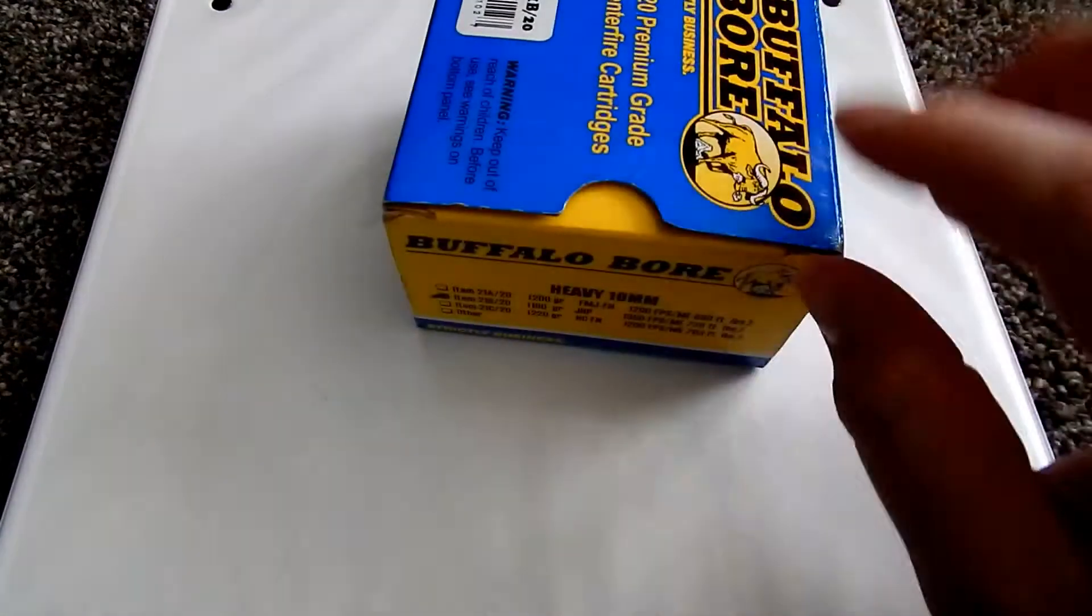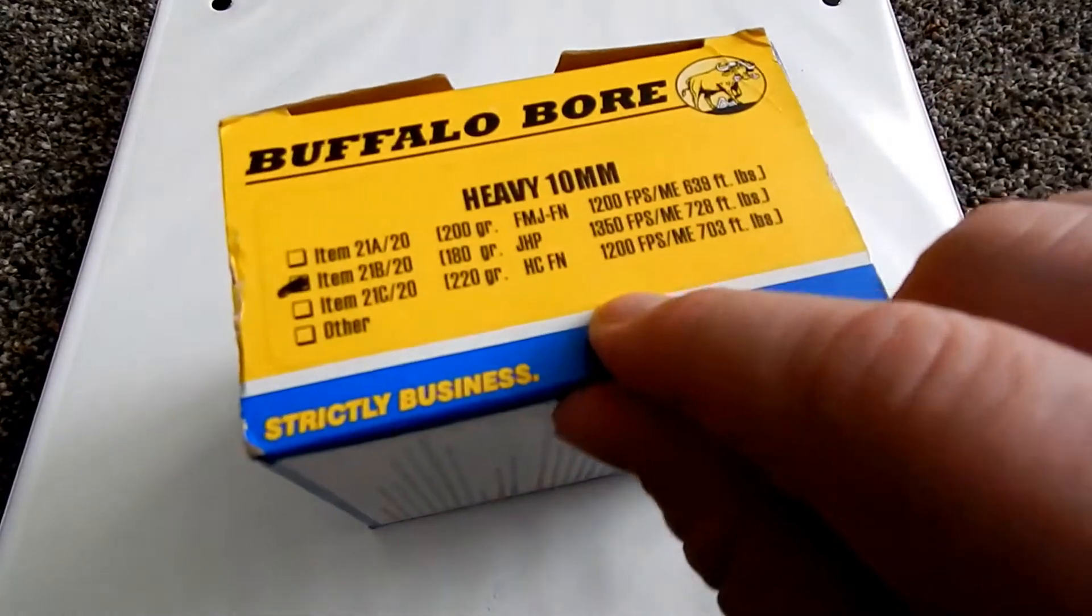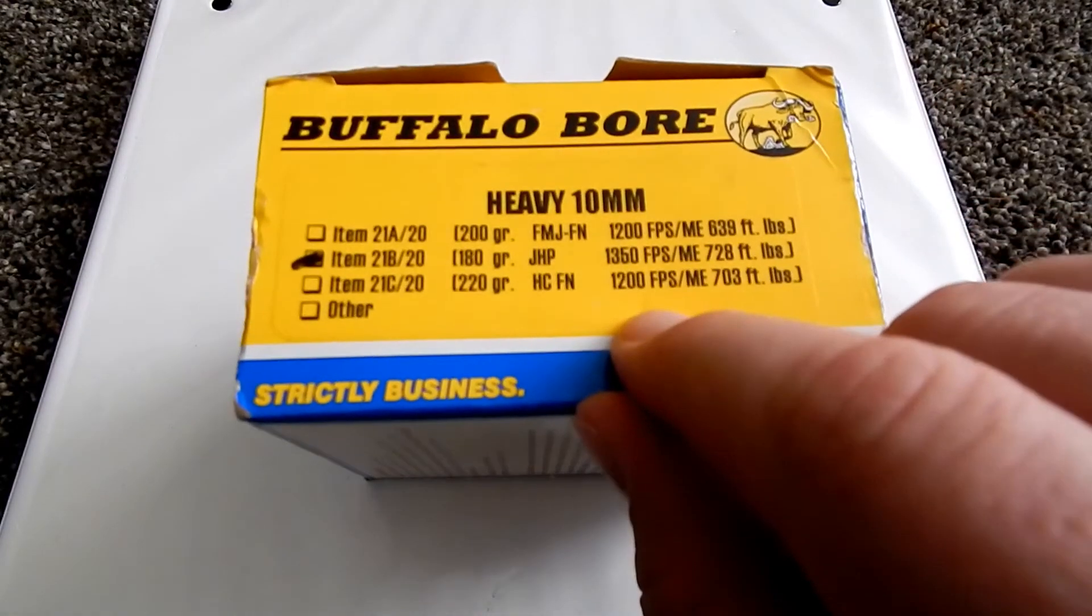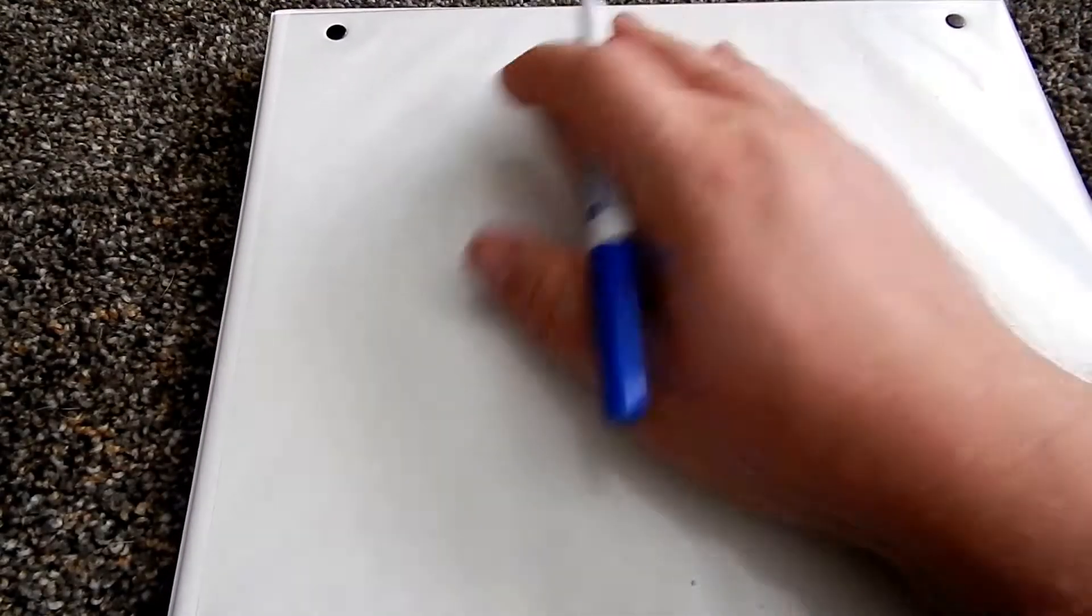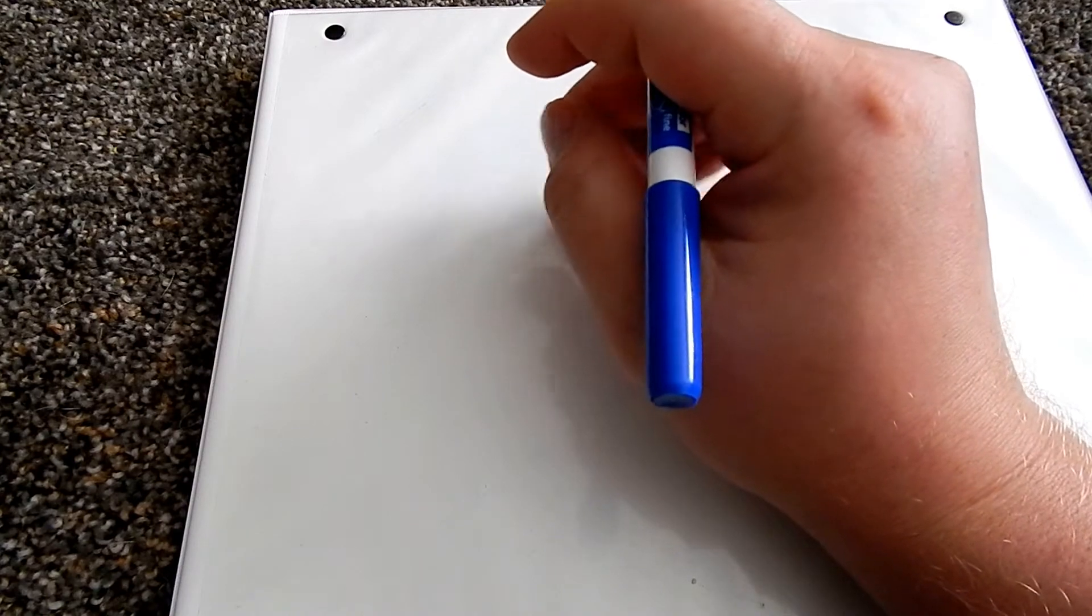Not every manufacturer is like Buffalo Bore and will post this on the box. Most times you will get the grain and the velocity, the feet per second. So if you want to try to figure out how much your muzzle energy is, there's a very simple formula.